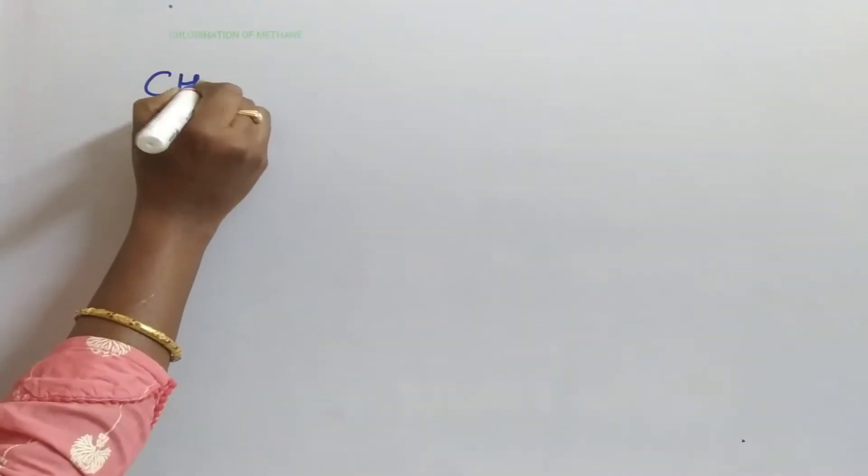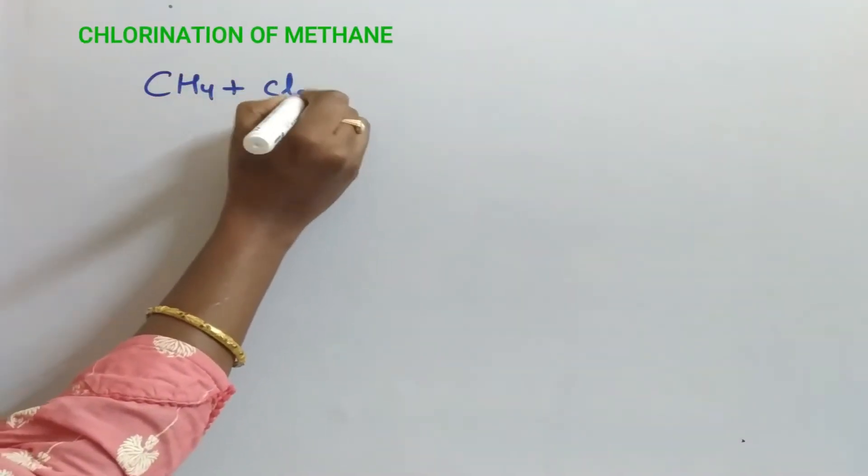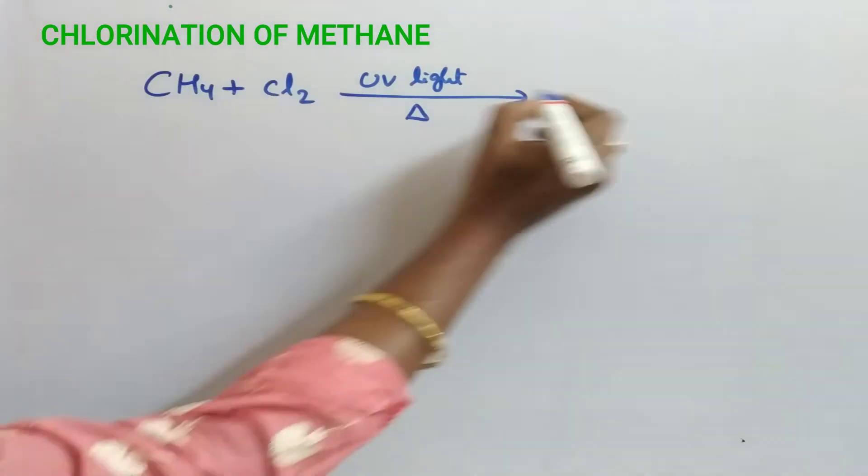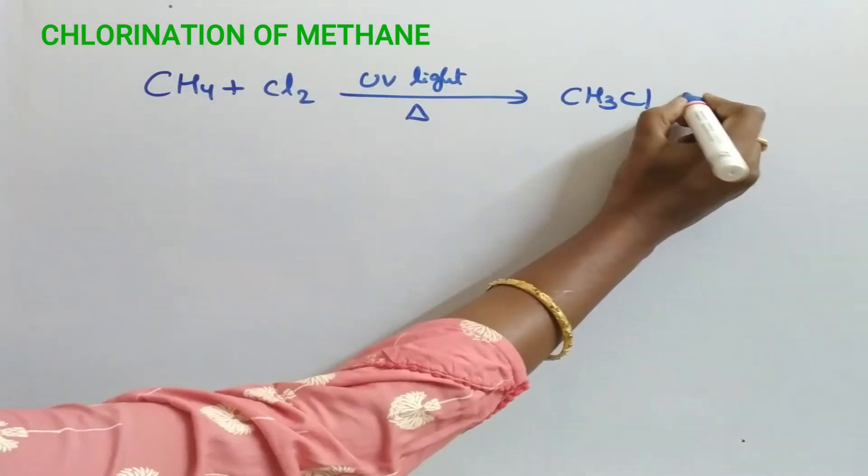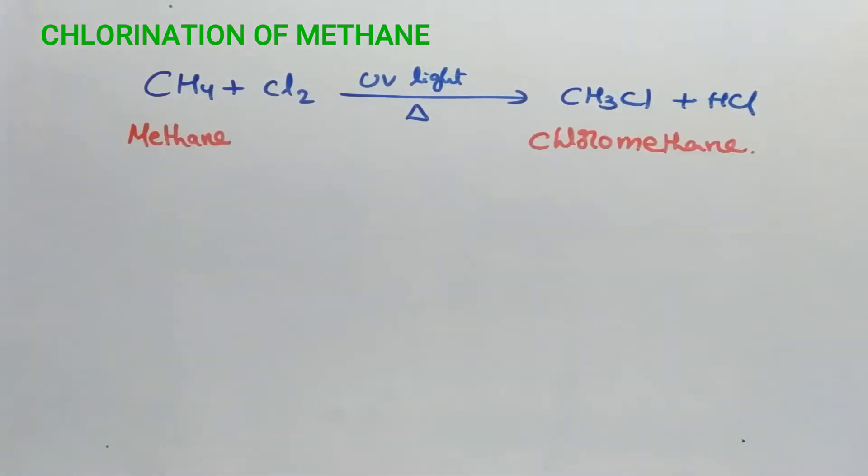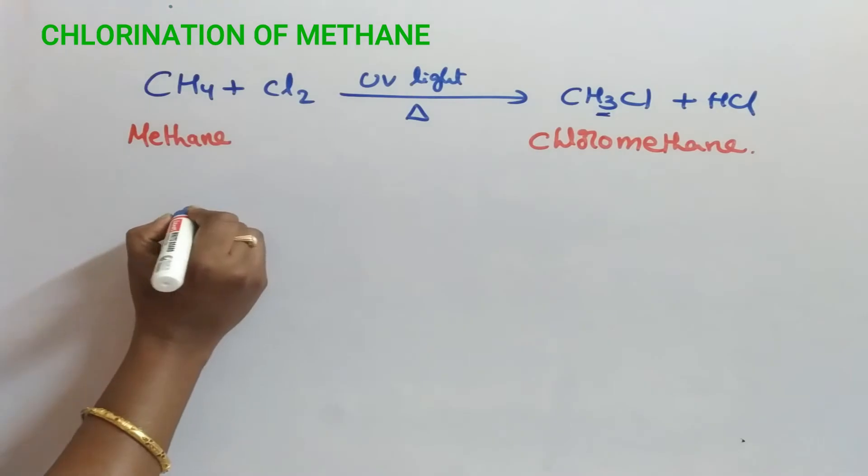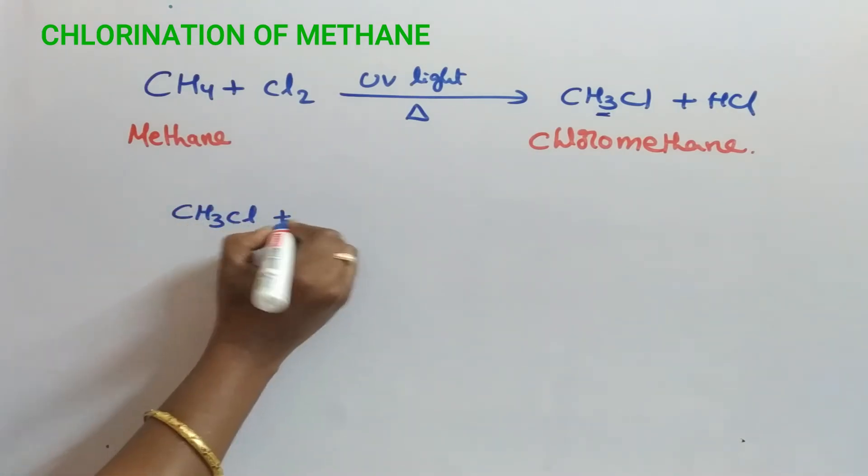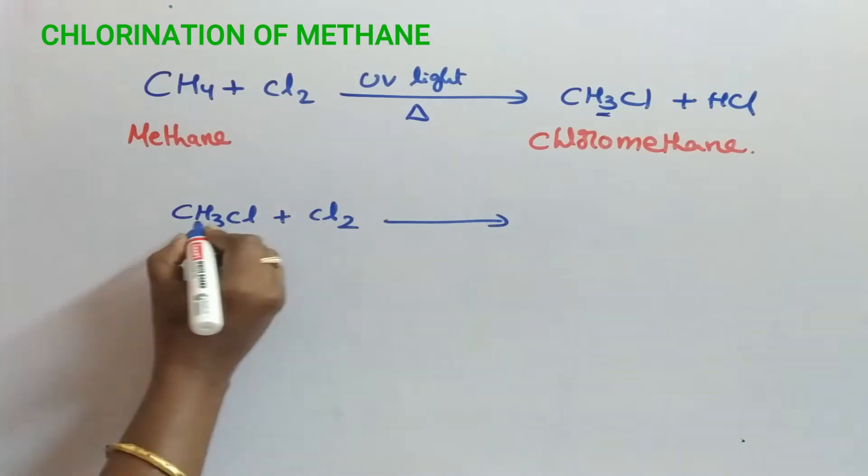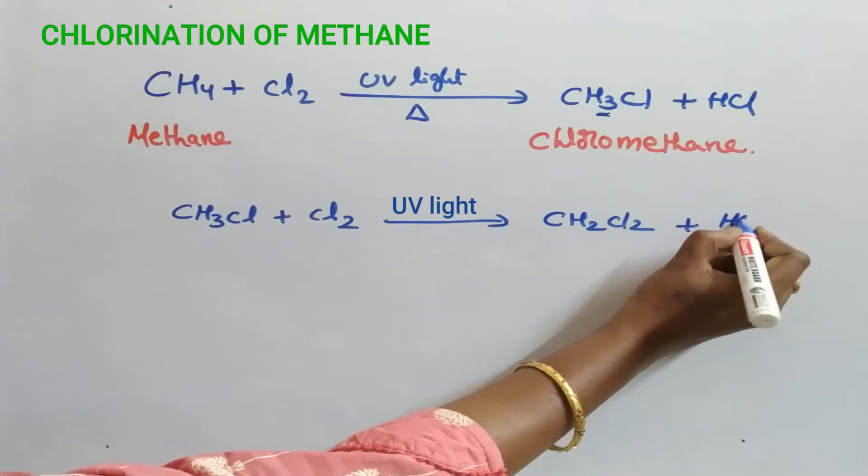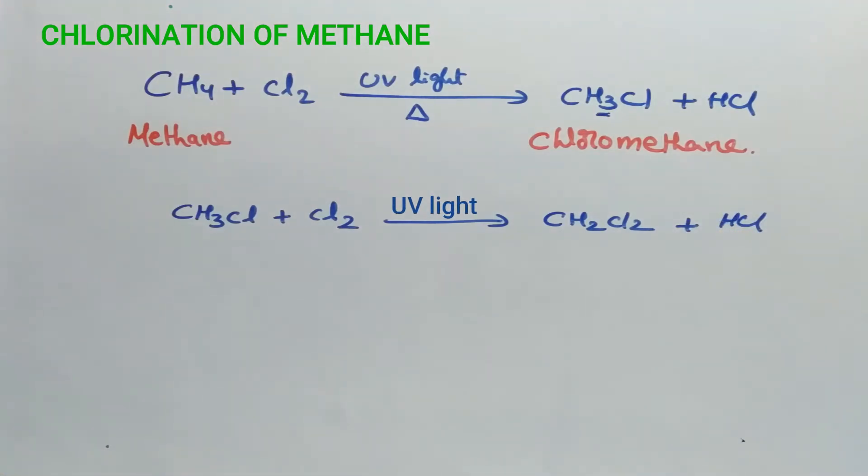For example, methane reacts with chlorine in the presence of UV light or at high temperature resulting in the formation of chloromethane and HCl. The reaction does not stop at this stage. The remaining three hydrogens of chloromethane can be successfully replaced by chlorine atoms. Again this chloromethane reacts with chlorine and thereby forms CH2Cl2 plus HCl. This is dichloromethane.